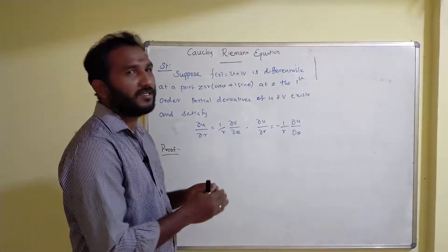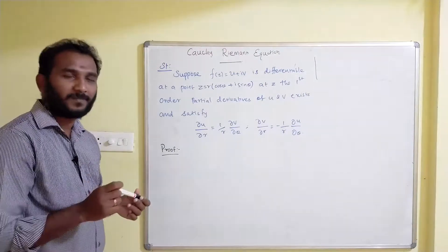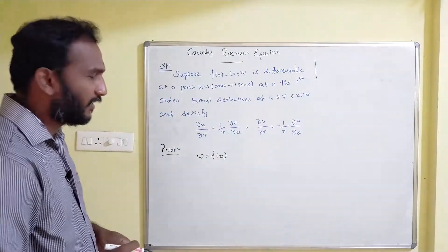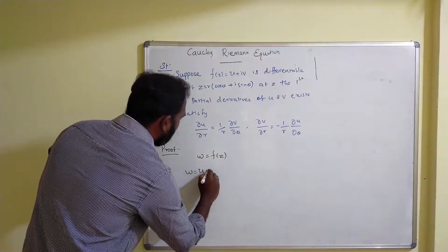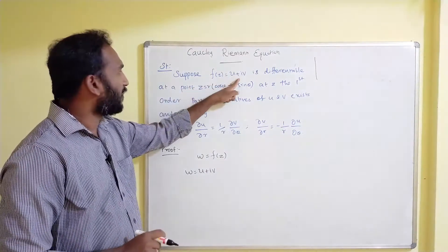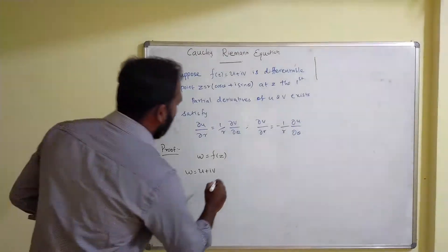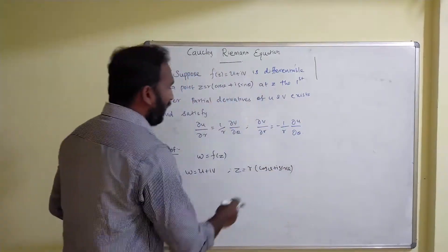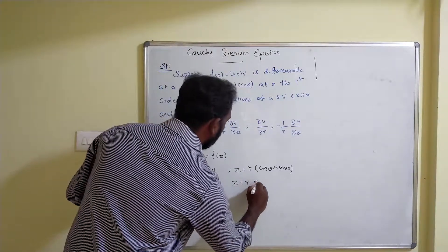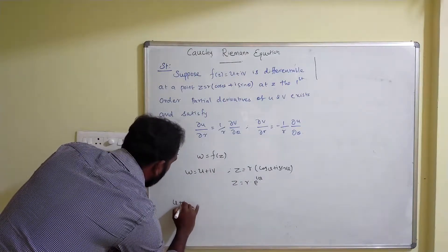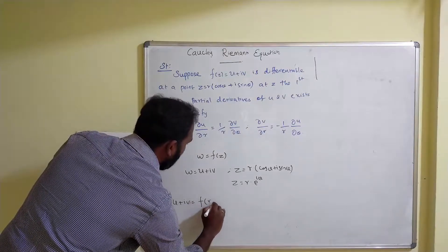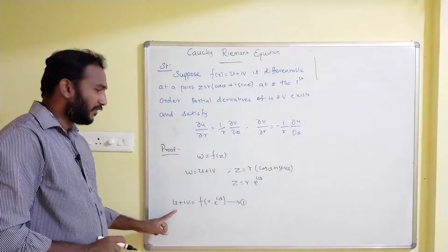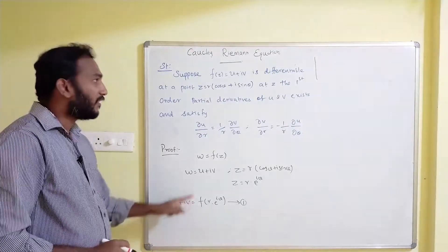Similar to the Cartesian coordinate proof, we recall the complex variable function. Consider w = f(z) for polar coordinates, so w = u + iv where u and v are functions of r and θ, and z = r·cosθ + i·sinθ = r·e^(iθ). Substituting, we get u + iv = f(r·e^(iθ)). Take this as equation number 1. We need to differentiate partially with respect to r and θ.